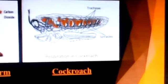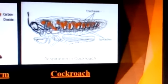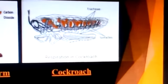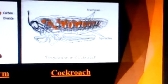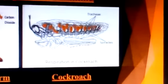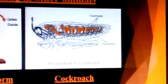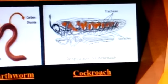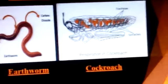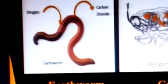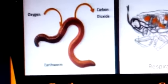Similarly, carbon dioxide from the cells goes into the tracheal tubes and moves out through the spiracles. These air tubes or trachea are found only in insects and not in any other group of animals. So insects breathe through spiracles and trachea.